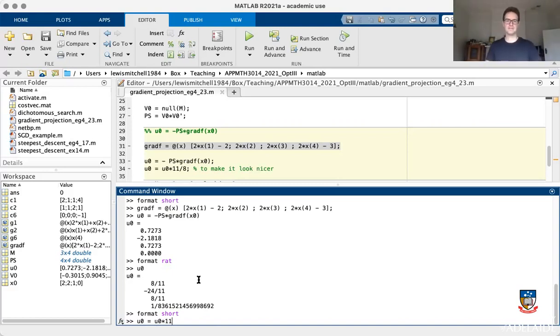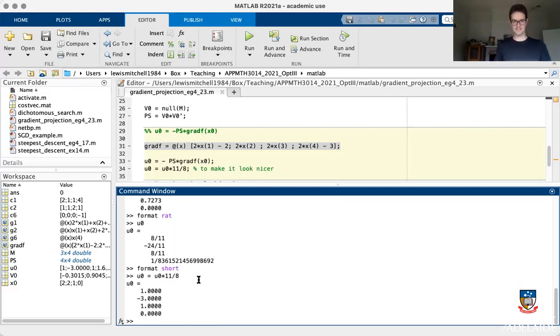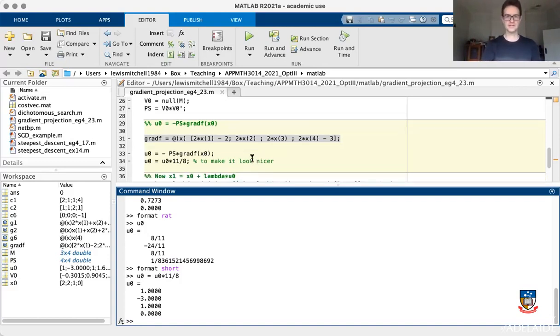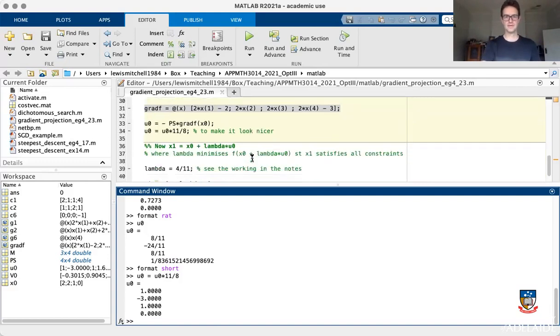So just to tidy this up, to do some cosmetic surgery on this, if I multiply U naught by 11 to get rid of that fraction of 11, and then I've got eight, a 24 and an eight, I divide everything by eight and I get a U naught that looks a bit nicer. I get one, negative three, one, and that's fine. U naught is just a direction to head in. So it's fine to write it like that. Okay. So now, what next? Let's come back to the algorithm.